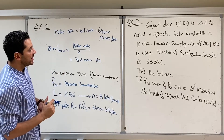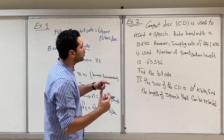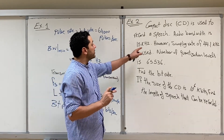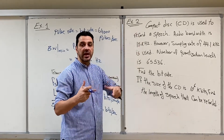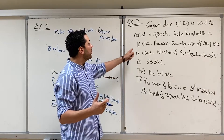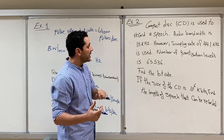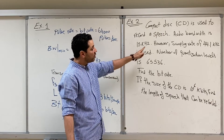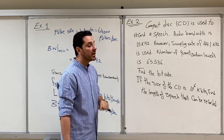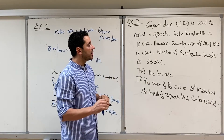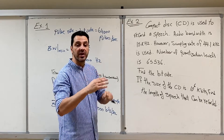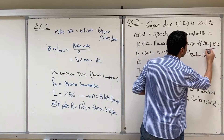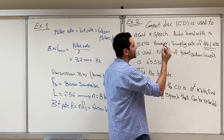The second example: a compact disc (CD) is used to record speech. It's not a transmission — it's recording. The bandwidth is 15 kHz since CDs use high-quality audio. The Nyquist rate would be 30 kHz, but the actual sampling rate on CDs is 44.1 kHz to improve quality and reduce aliasing between images. So F_S = 44.1 kHz.